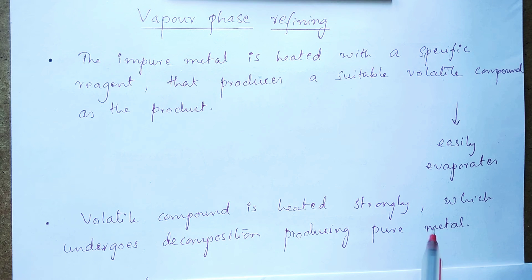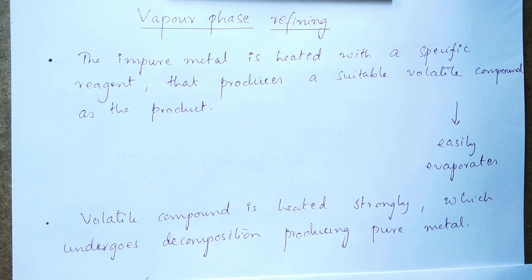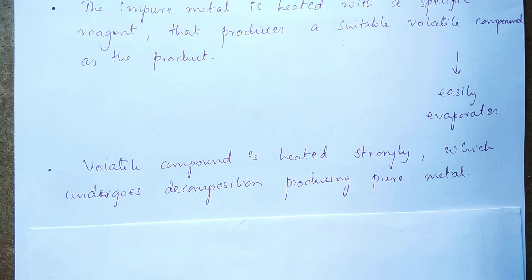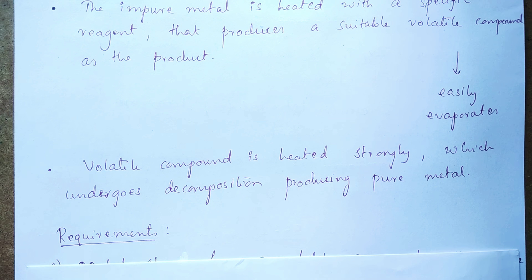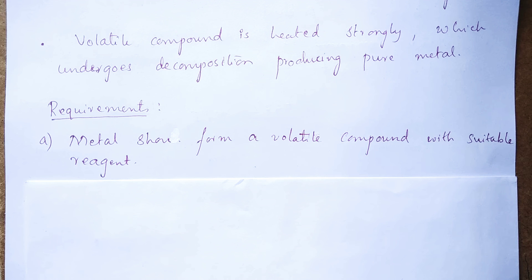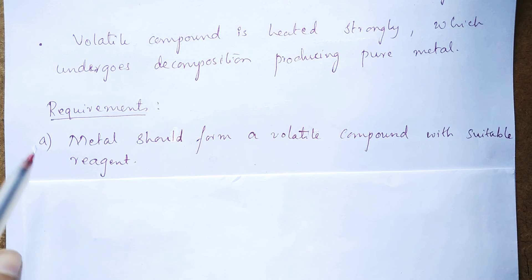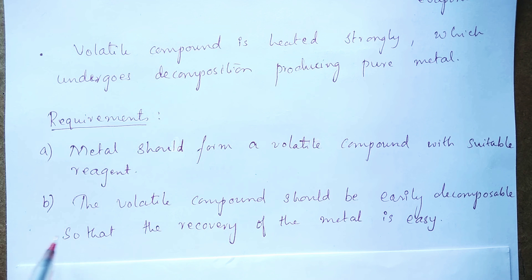That volatile compound is heated strongly, which undergoes decomposition reaction, breaking down and producing pure form of metal. There are two requirements to carry out vapor phase refining: first, the given metal should form a volatile compound with a suitable reagent, and second, the volatile compound should be easily decomposable so that the recovery of the metal is easy.